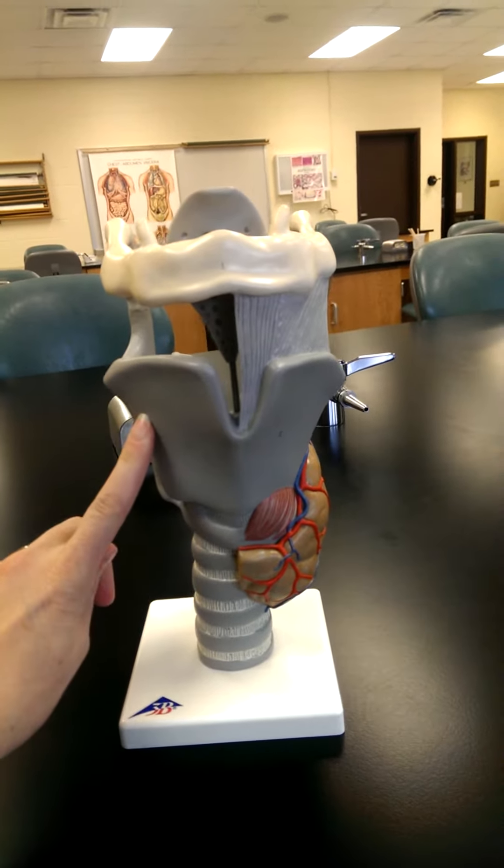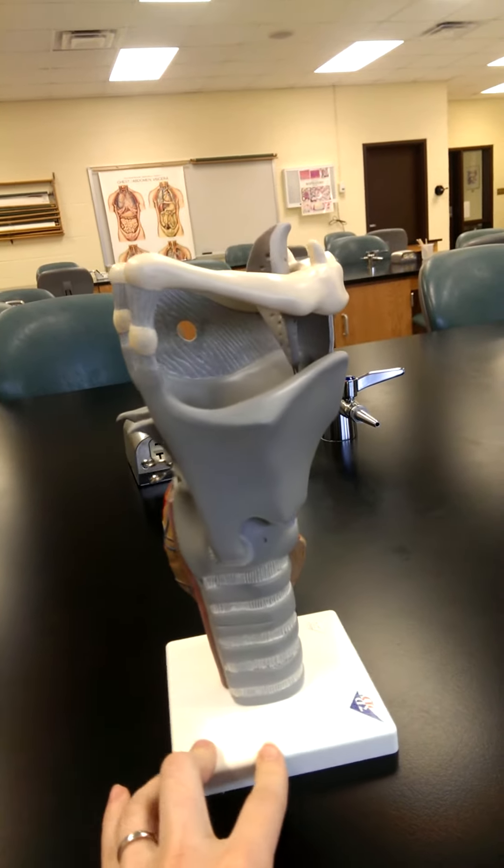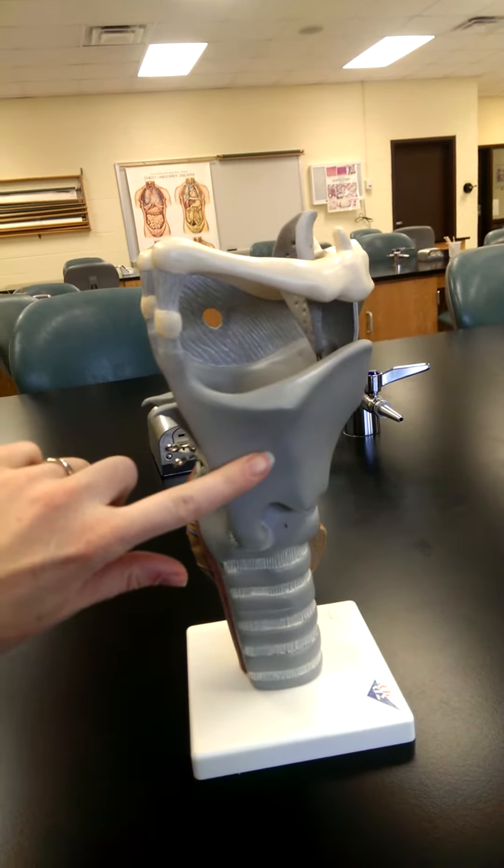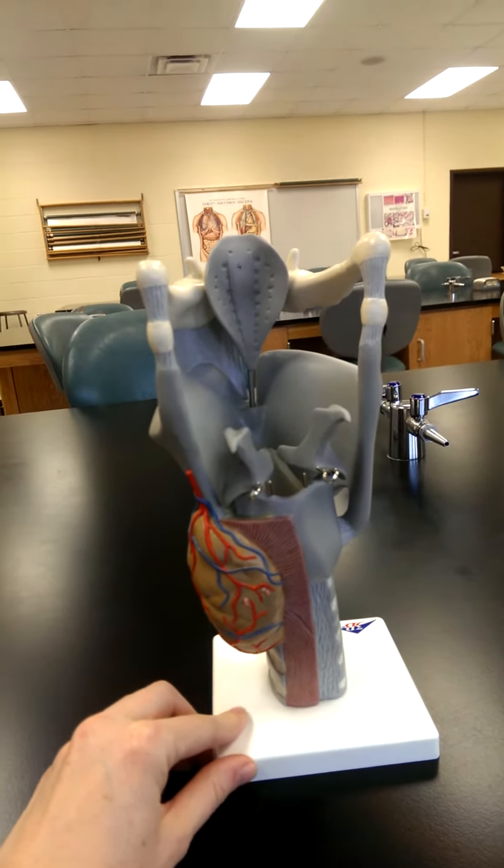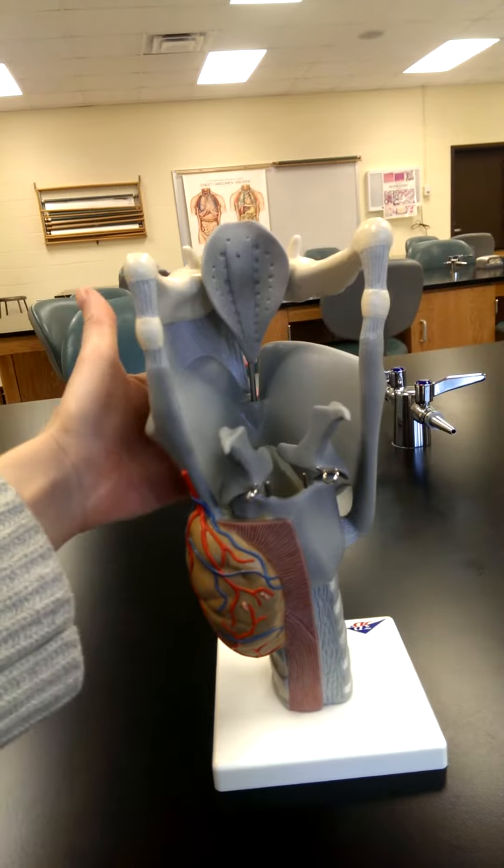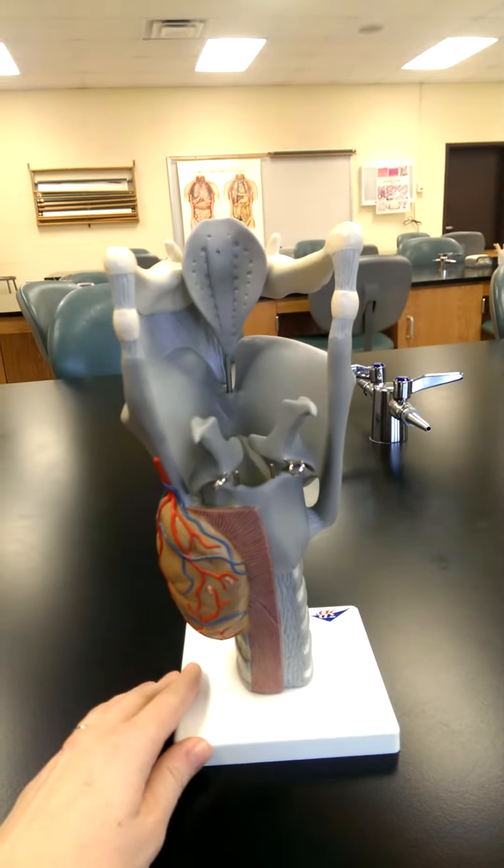So the first cartilage is this one here. This is the thyroid cartilage. It's pretty large. If you notice it comes around, covers the lateral part of the larynx, but it does not exist posteriorly. So it's really sort of shield shaped, just sitting on the anterior part of that larynx.